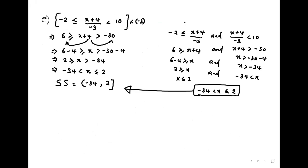A student asks whether you can express the solution as negative infinity to negative 3 over 4 union something. The teacher replies: how do you have a union when you only have one interval? We only have one piece.